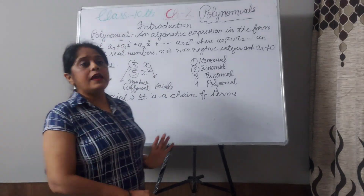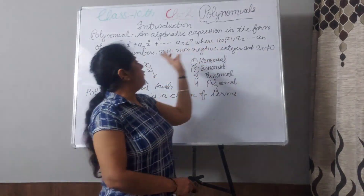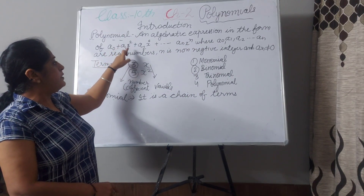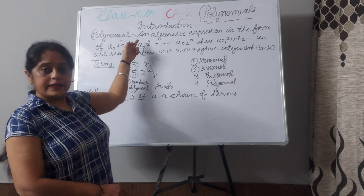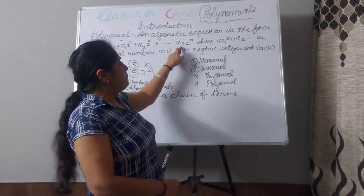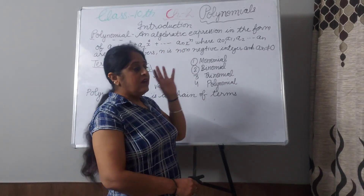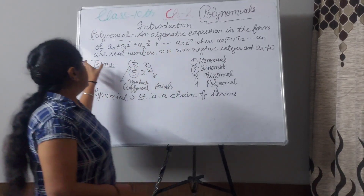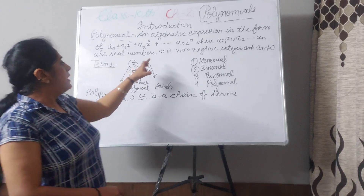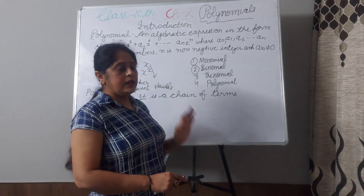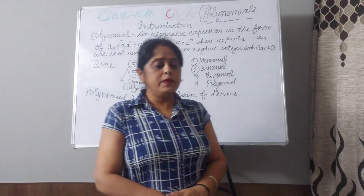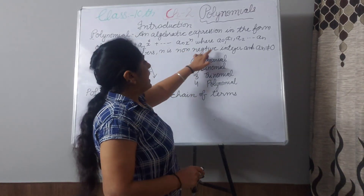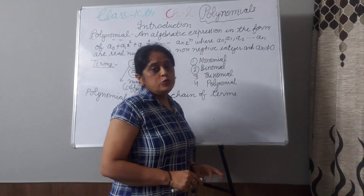A polynomial is an algebraic expression in the form of a0 plus a1·x plus a2·x² and so on up to an·xⁿ. Here a0, a1, a2, and an are real numbers, n is non-negative — the power n should not be negative, and an should not be 0.